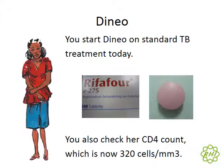In the first module, we started a case with a lady called Denio, who was GeneXpert negative, and we had started on empiric TB treatment. That module covers the case approach in some detail. We're starting her on TB treatment today, and her CD4 count at the moment is 320 cells.